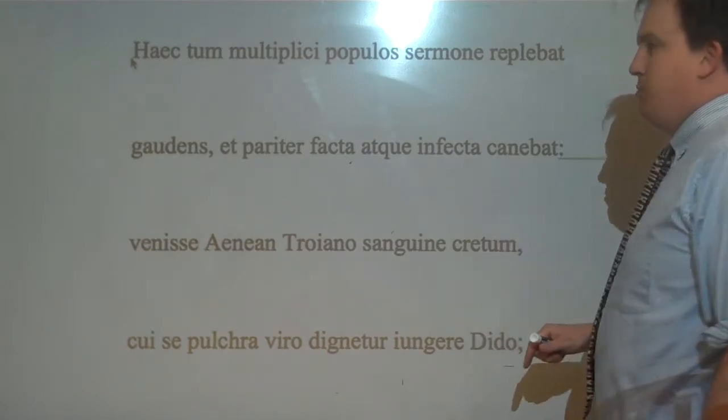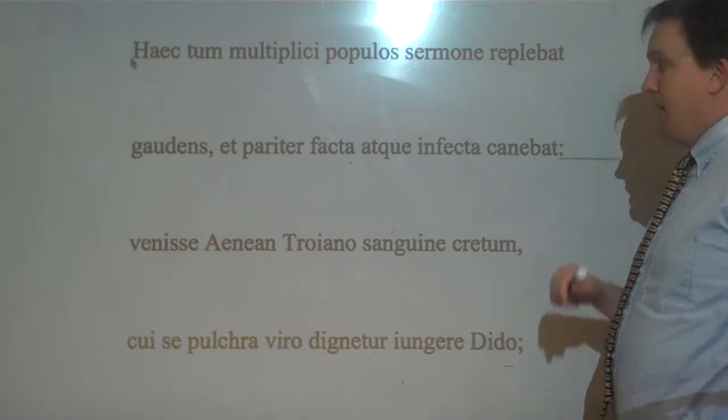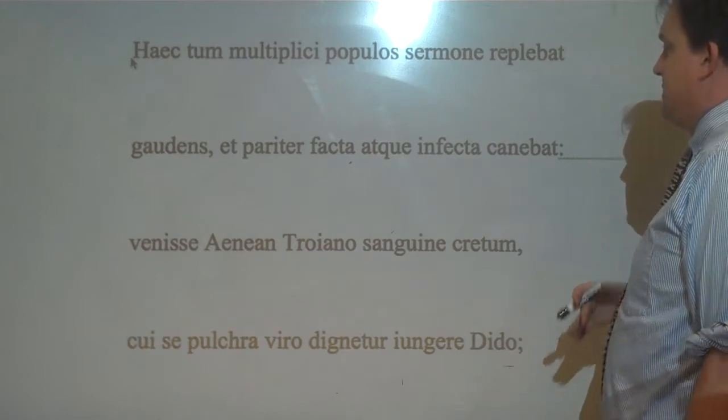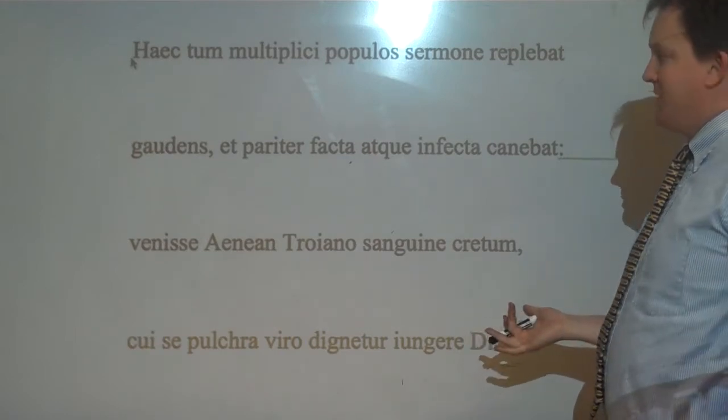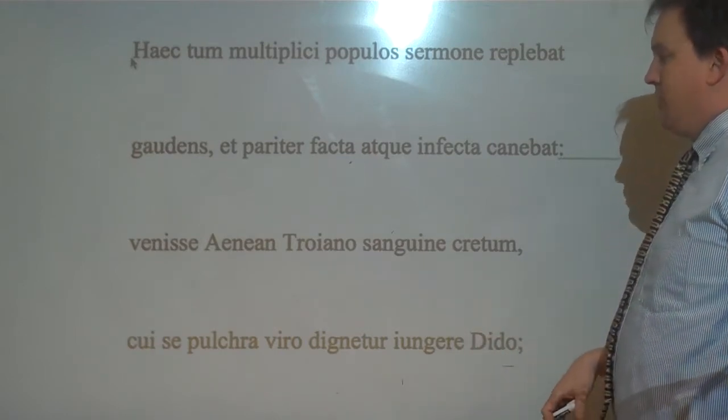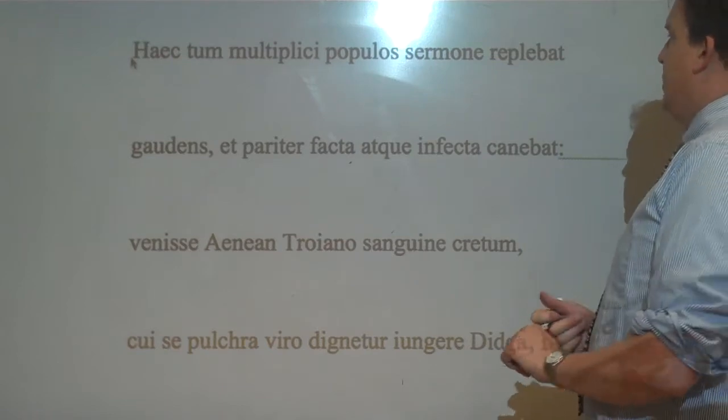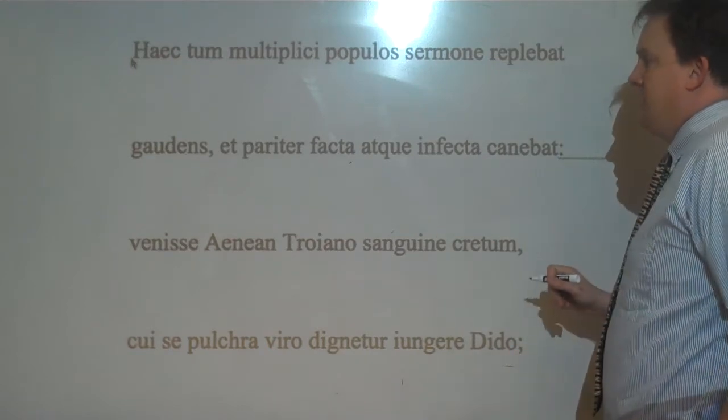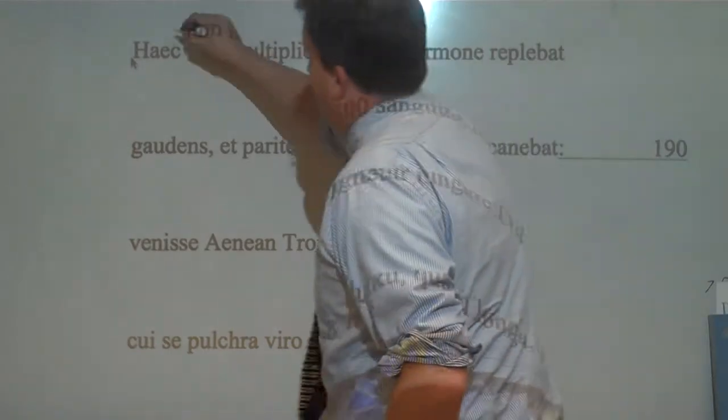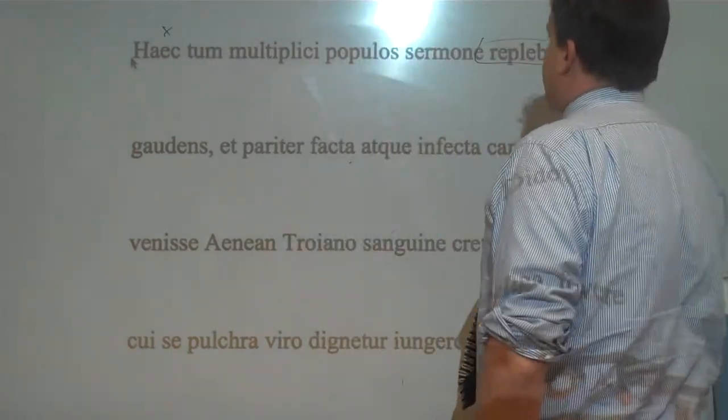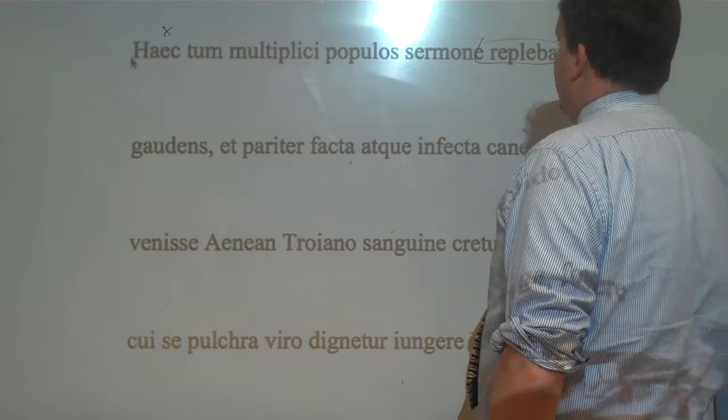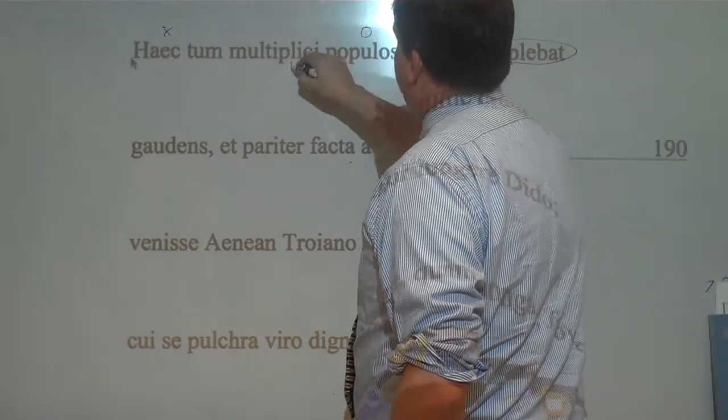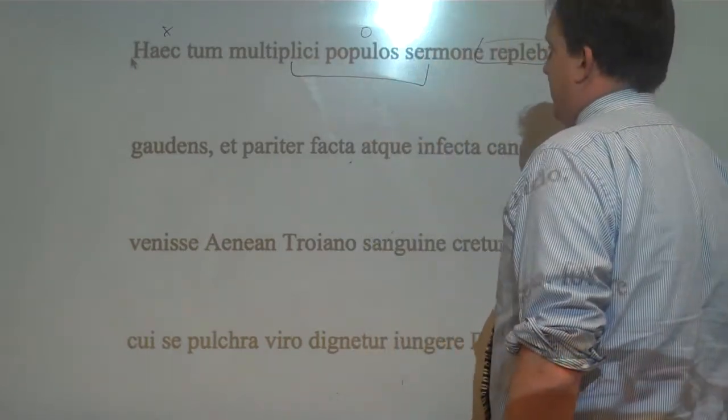Let's hang on next. Today we're looking at Book 4, lines 189 to 218. This is the finishing up of the Fama passage and also Jarbas. So Haec, we start off here, is Fama. Haec Reclaybats, this creature filled up the people with various talk then.